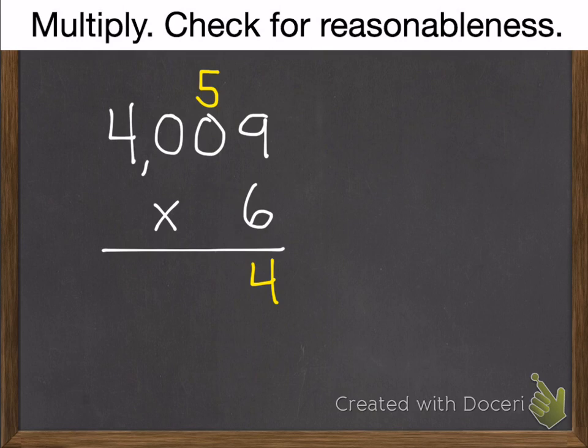9 times 6 is 54. 6 times 0 is 0, plus 5 is 5. 6 times 0 is 0. 6 times 4 is 24. So your answer is 24,054.